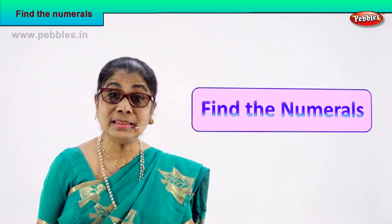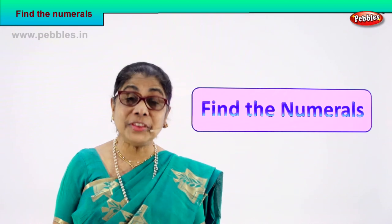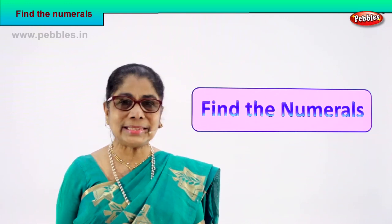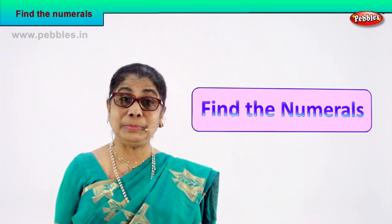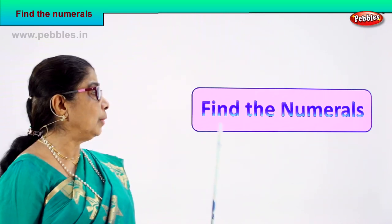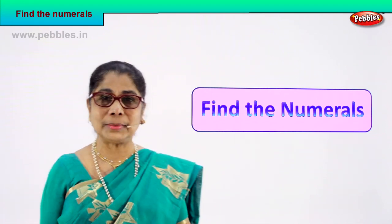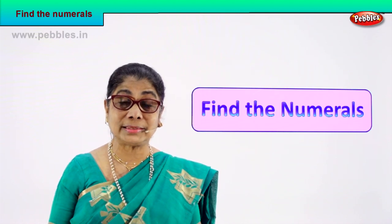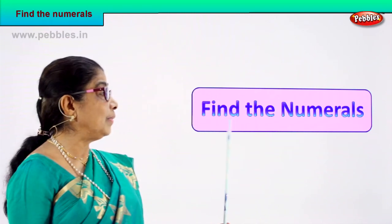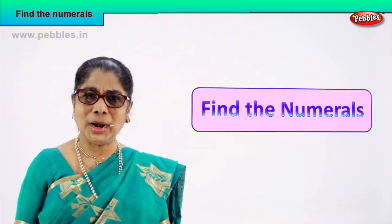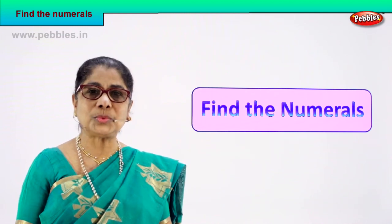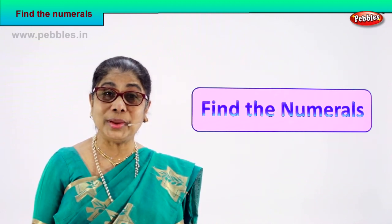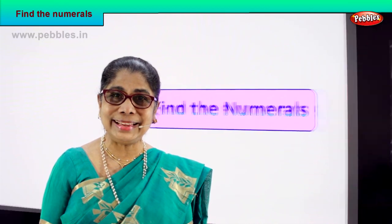Hi children, we learnt the number names from 51 to 60. You know how to spell 50, you know how to spell 60, and you can write the number names 51 to 60. Now what we are going to do is find the numerals. We will do a small exercise — a very interesting exercise. The number name will be there and you will find the numeral. One by one we will do it. You look, spell, and see what is the numeral for that number name. I hope you will enjoy it!